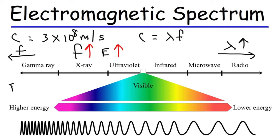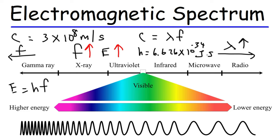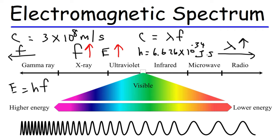The energy of a photon is equal to Planck's constant times the frequency. Planck's constant is 6.626 times 10 to the negative 34 joules times seconds. This equation shows that the energy of a photon is directly proportional to the frequency, so as the frequency goes up, the energy of the photon goes up as well.